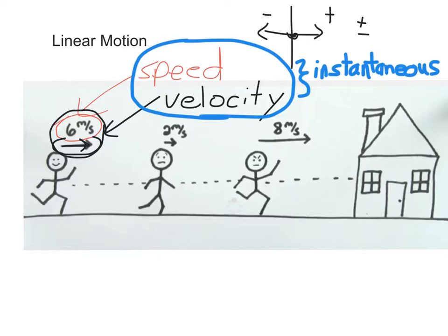This is similar to what your speedometer does in the car. When you look down at your speedometer, it's telling you how fast you're going right then. And that's true for all of these speed measurements. They're instantaneous speeds and instantaneous velocities.